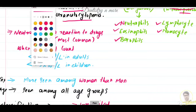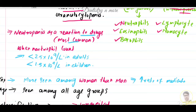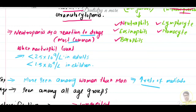Regarding gender predilection, agranulocytosis occurs slightly more frequently in women than in men, possibly because of their increased rate of medication usage. Whether this high frequency is related to the increased incidence of autoimmune disease in women is actually unknown — that is also a possibility.